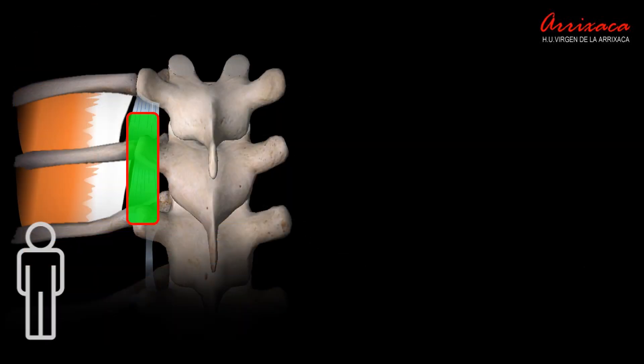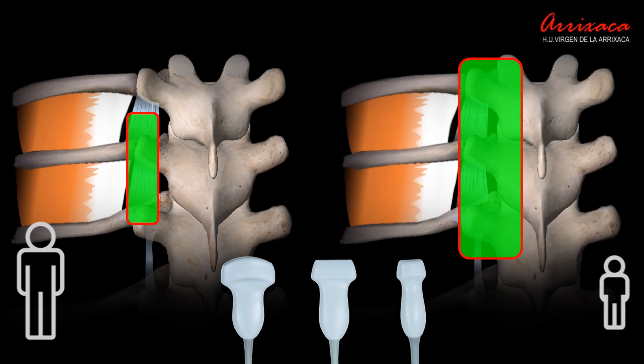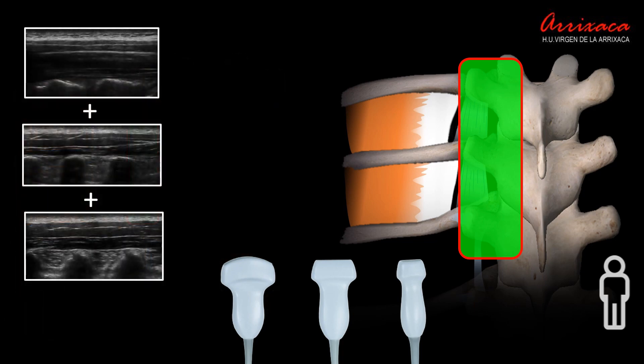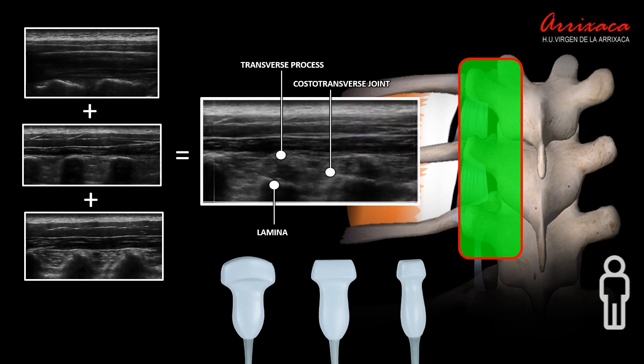Furthermore, the difference in size between the child's vertebral spine and that of the adult makes the transducer used, as well as its footprint, of vital importance. The use of transducers with overly wide footprints can provide overlapped images of multiple vertebral structures, making it difficult to identify the optimal point for approach.